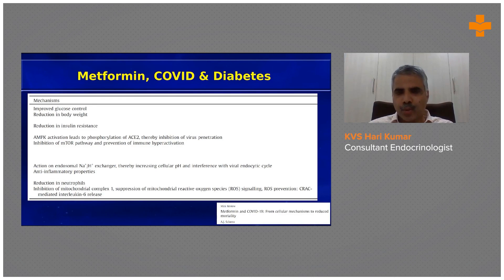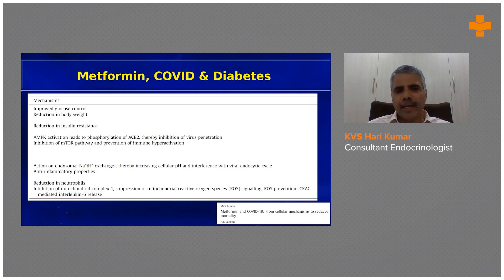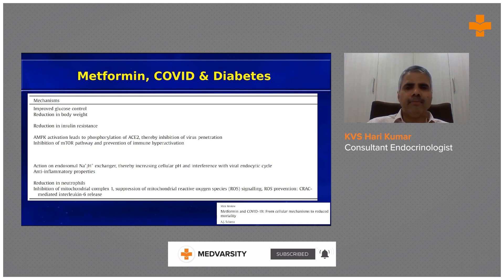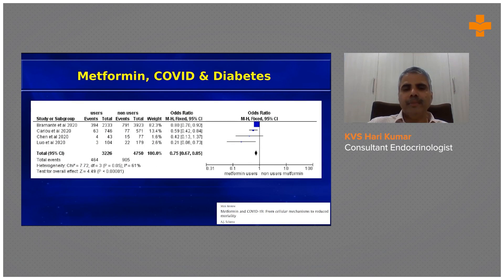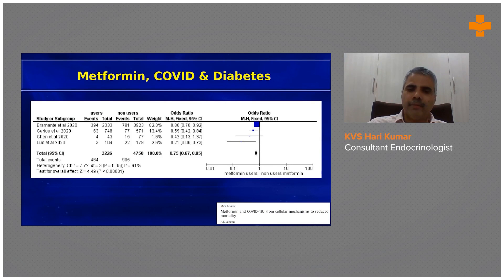Let's discuss some drugs in relation to COVID. Metformin is the number one drug for COVID and diabetes. It has multiple mechanisms of action, primarily reducing insulin resistance, and also provides cellular AMPK activation — which senses energy levels in the cell — along with antioxidant and anti-inflammatory effects. A meta-analysis forest plot shows metformin users fared better than non-users in COVID-related mortality.